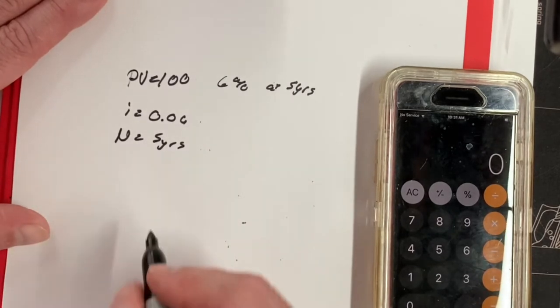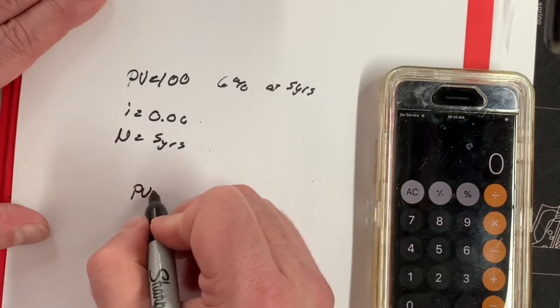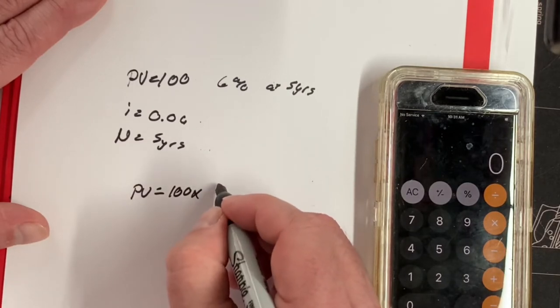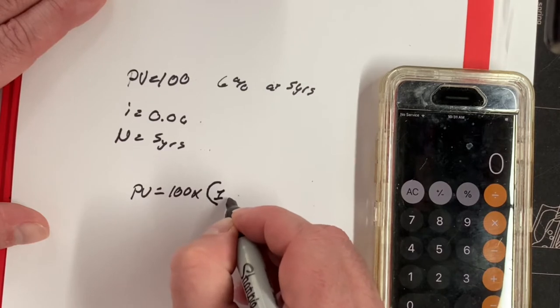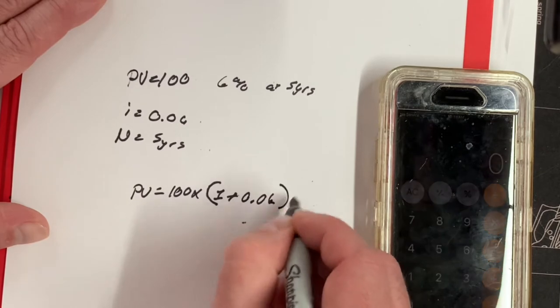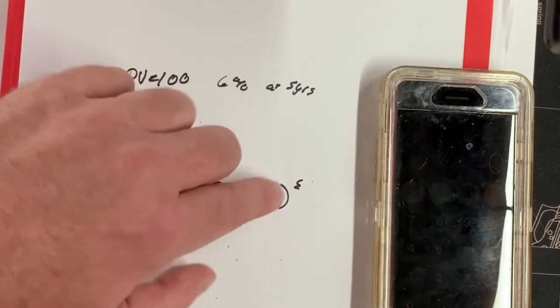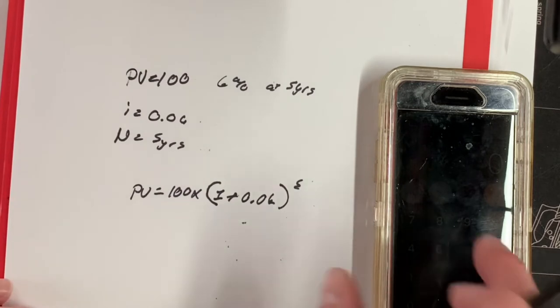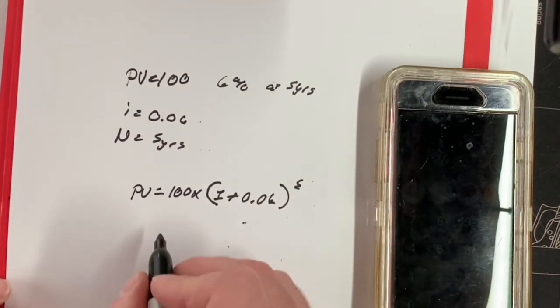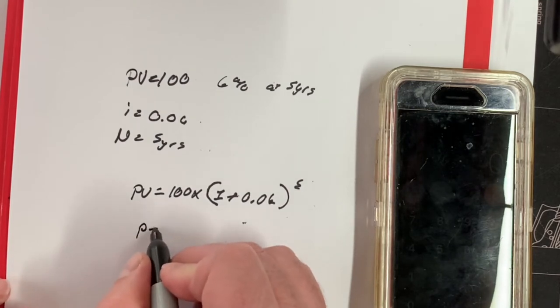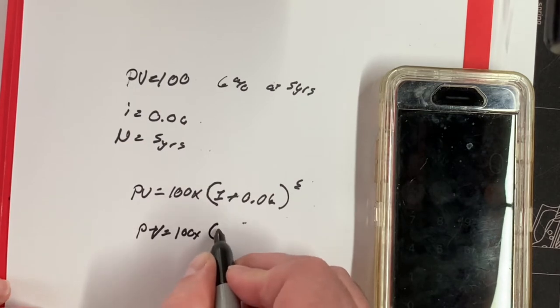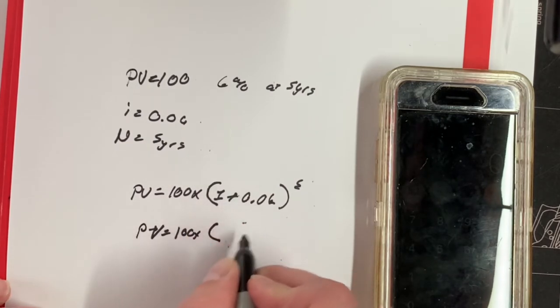We're going to make the formula itself. PV equals 100 times parenthesis, 1 plus 0.06, to the fifth power for five years. Make sense? All right, good deal. Now we're going to break this down into order of operations and how we do that is PV equals 100 times 1 plus 0.06.